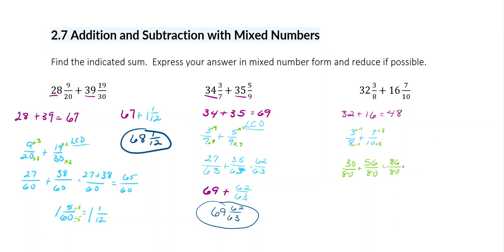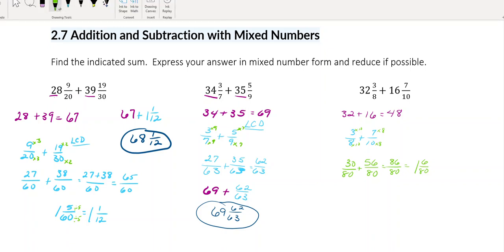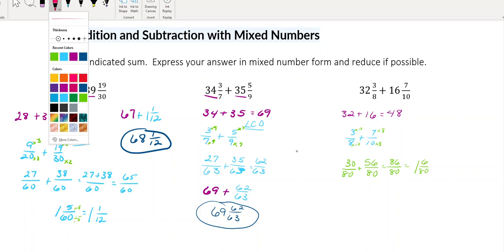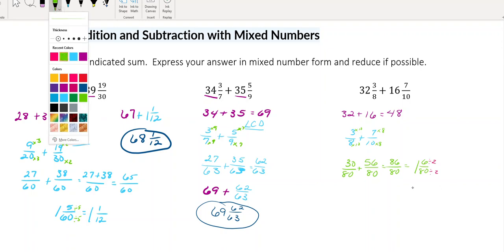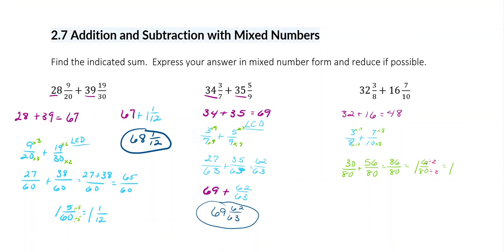And then I'm going to write it as a mixed number again. I know 80 goes into 86 one time, with 6 left over. Then I know I can reduce — 2 will go into 6 and 2 will go into 80. So I end up with 1 and 3 over 40.